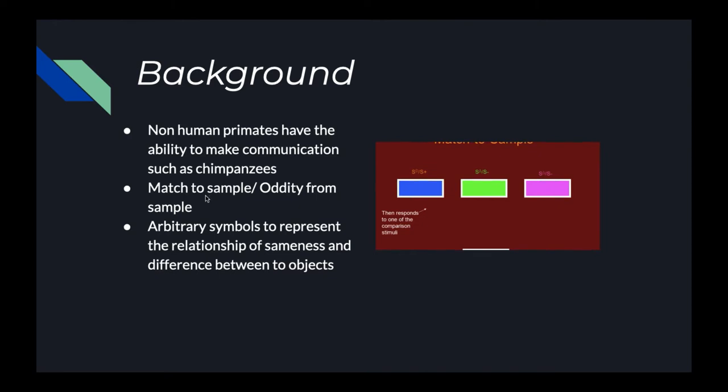So there has been a researcher named Premack who has said that same and different concept should not be based on the total similarity and difference of the object. It should be based on arbitrary symbols, which we will look into further into the study.